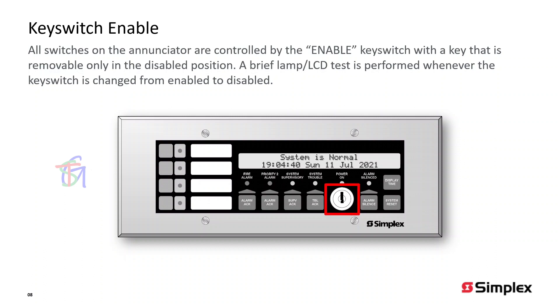All switches on the enunciator are controlled by the enable key switch with a key that is removable only in the disabled position. A brief lamp LCD test is performed whenever the key switch is changed from enabled to disabled.